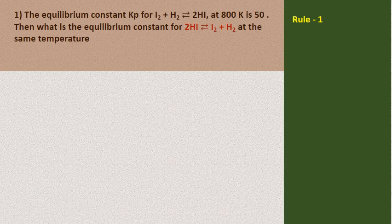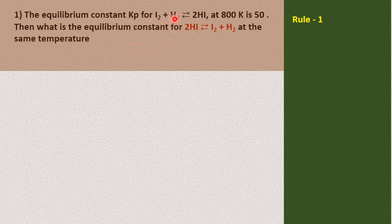Dear students, let us see the solutions for questions asked in the examination. The question is: the equilibrium constant Kp for I₂ + H₂ ⇌ 2HI at 800 Kelvin is 50. Then what is the equilibrium constant for 2HI getting converted to I₂ and H₂ at the same temperature? So in the first case, I₂ combining with H₂ gives 2HI, whereas in the second equation, 2HI is getting converted to I₂ and H₂.